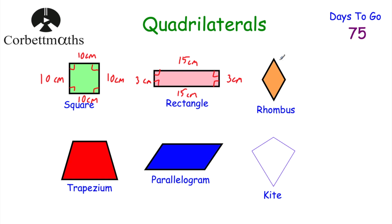The rhombus has all four sides the same length — for instance all 8 centimetres. The opposite angles are equal to each other. It has two lines of symmetry — vertical and horizontal — and rotational symmetry of order two.